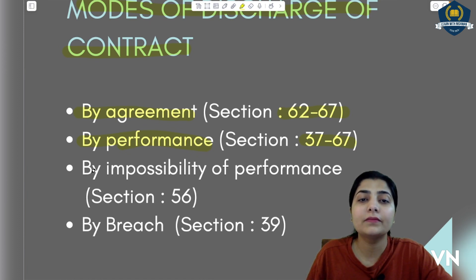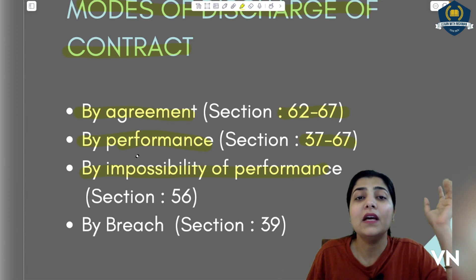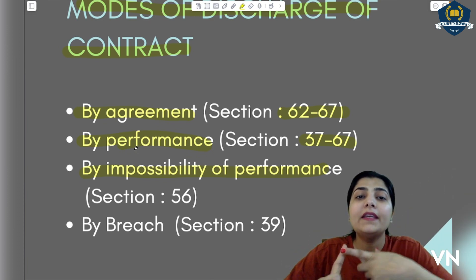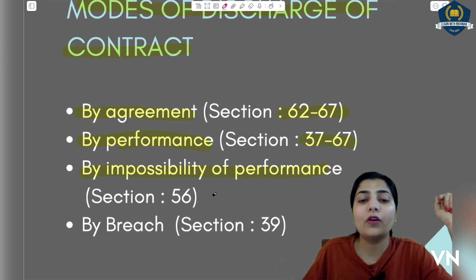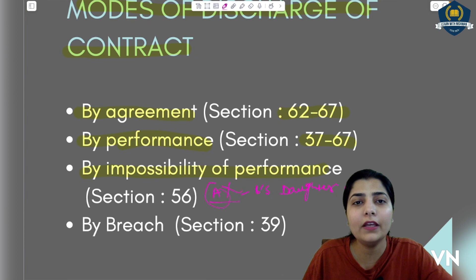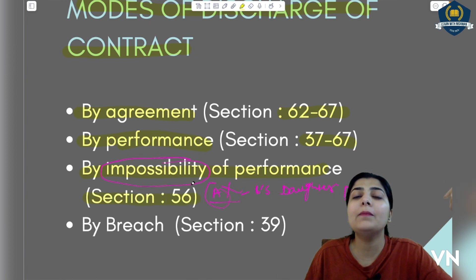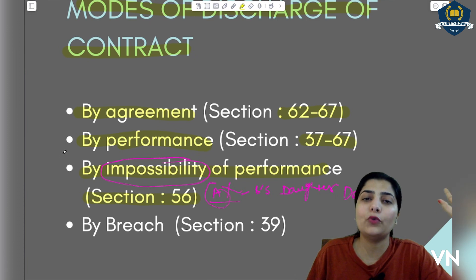The third way is by impossibility of performance — the work written in the contract has become impossible to do. For example, the contract was that A will marry B's daughter. But B's daughter has now died. So A is automatically free — he cannot marry someone who is already dead. This becomes impossibility of performance: performance is now impossible. This is given in section 56, which deals with impossibility.